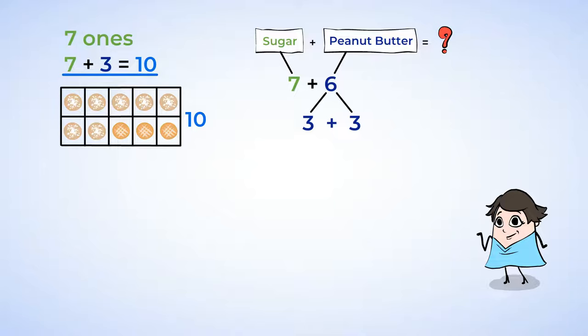Of course, you didn't change the number of peanut butter cookies, but just took 3 of them to make a 10. Since you have 10 ones, the value of this is 10, because 10 ones will make 1 10.